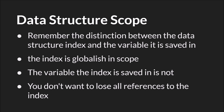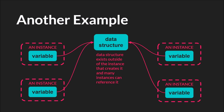As demonstrated previously, you don't want to lose all references to the index or you have a lost data structure that you can't reference and destroy. You can have multiple instances, each holding a variable that references a data structure — all of these instances could reference, pull, use, or even change data from this data structure. But the data structure exists externally, and each instance just has a variable with an index referencing it. Let's switch over to GameMaker Studio 2 and see some examples.